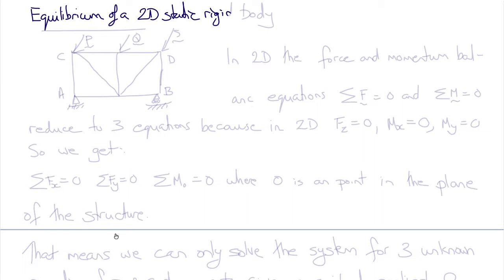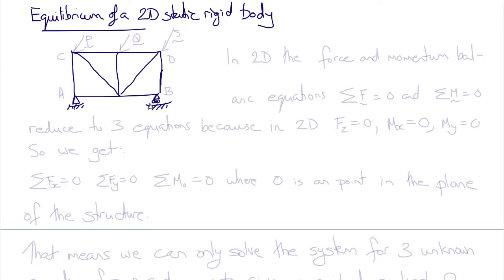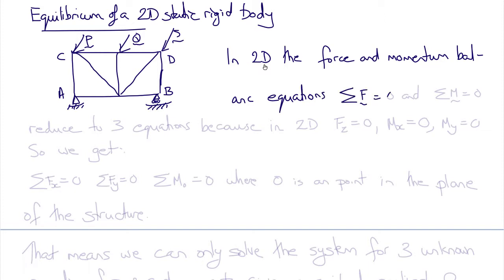Let's look at the equilibrium of a two-dimensional static rigid structure. The structure has nine members, a pinned support at the left end, and a pinned support on rollers at the right-hand end, with three applied external force vectors plus the weight. The four corners are labeled A and B at the supports, and C and D on the top. In two dimensions, the force and moment balance equations reduce to three equations, because the Z component of force and the X and Y components of the moment vector are zero.